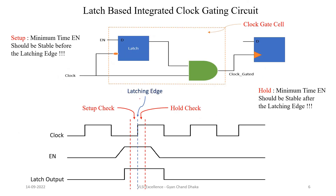For the negative level sensitive latch, the rising edge is our latching edge. In order to make sure that the latch is sampling the input data properly, the enable signal should be stable for some time before this latching edge — that is our setup check. And in order to make sure that any new data is not going to overwrite the old data quickly, the input data should be stable for some time after the rising edge of the clock — that is our hold check. These checks are very similar to the flip-flop setup and hold timing checks. In order to ensure that our clock gating circuit will have a perfect clock gated output signal without any kind of glitch, these setup and hold checks need to meet the timing requirements.